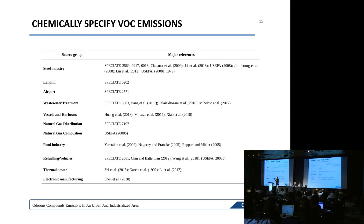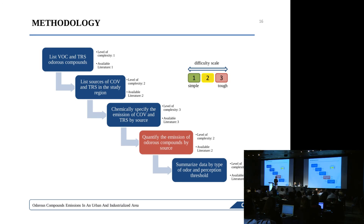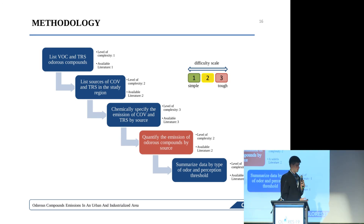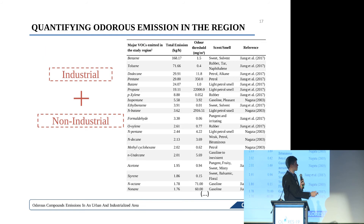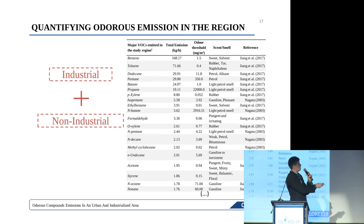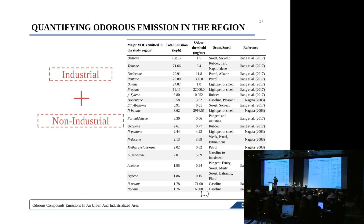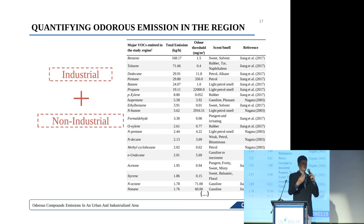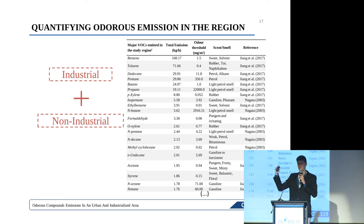We used US EPA documents and literature — many papers — to create these chemical profiles. Here is a sample of the industries and activities for which we obtained chemical profiles: the steel industry, landfill, airport, wastewater treatment, vessels and harbors, and many more. This was essentially a literature review to gather all these profiles and build the emission inventory of odorous compounds in the study region.